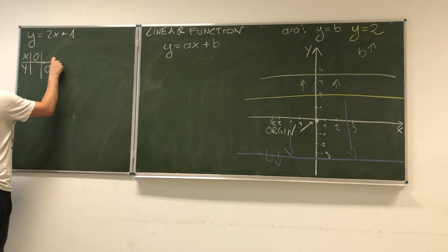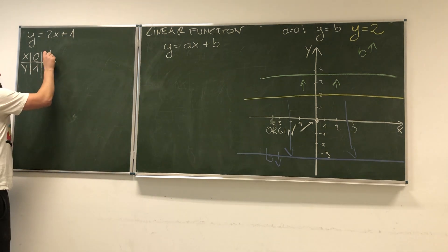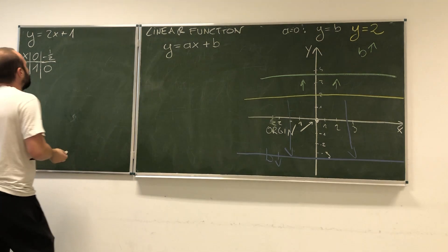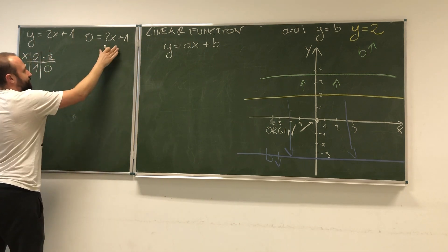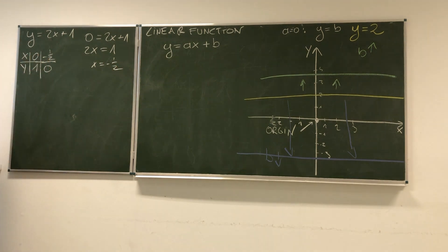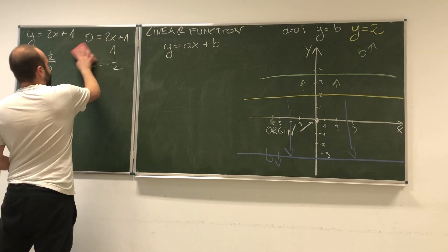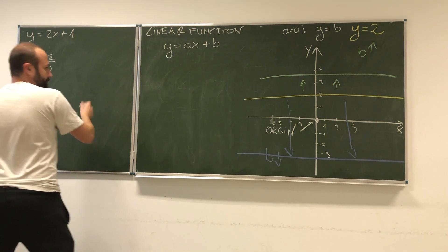We can find them using tables like you probably did in high school. We're looking for these two intercepts. First, if x is zero, y equals 1. When y is zero, x is negative 1 over 2. I substituted zero for y and solved this equation: 2x equals negative 1, so x equals negative 1 over 2. This is enough for us to draw this function.